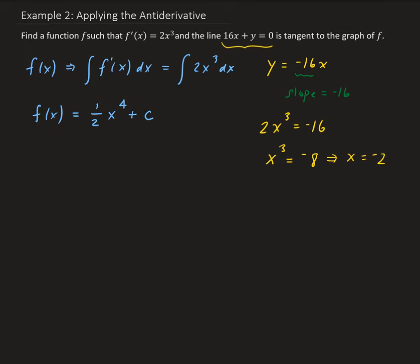So that means y is going to be equal to minus 16 times negative 2, which gives us 32. We now have our coordinate, and we can use that coordinate, which is (minus 2, 32), to solve for C.